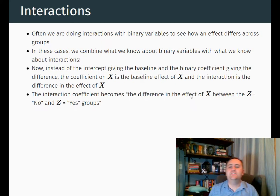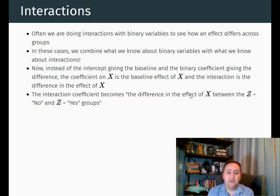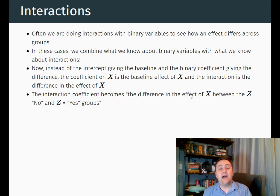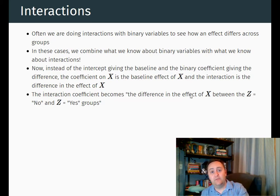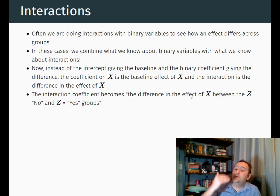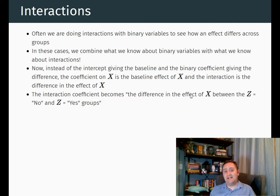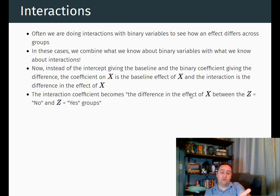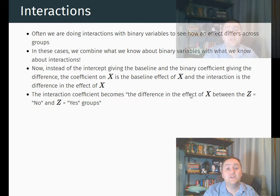Commonly, one of the terms we're interacting with is a binary variable, which makes things a lot easier to imagine. We can go back to our typical interpretation with binary variables. When we include a binary variable as a control, we're looking at the difference in means for y between the different values — for example, are you married or not? The coefficient on married tells me the difference in average earnings between married and non-married people. Now if I include it as an interaction term, it's telling me the difference in the effect — how does the effect of this variable differ for married versus non-married people?